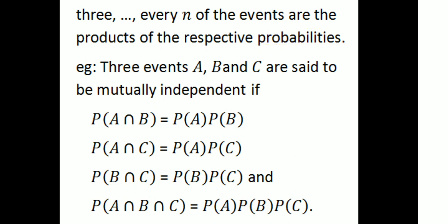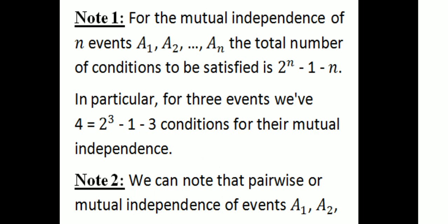For example, three events A, B, and C are mutually independent if: probability of A intersection B equals probability of A into probability of B; probability of A intersection C equals probability of A into probability of C; probability of B intersection C equals probability of B into probability of C; and probability of A intersection B intersection C equals probability of A into probability of B into probability of C.